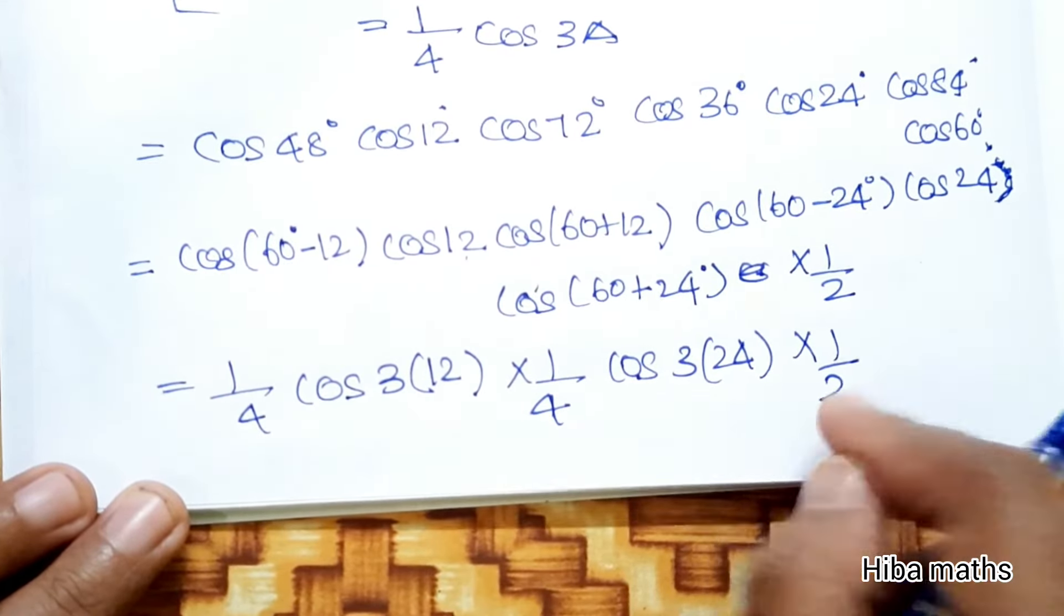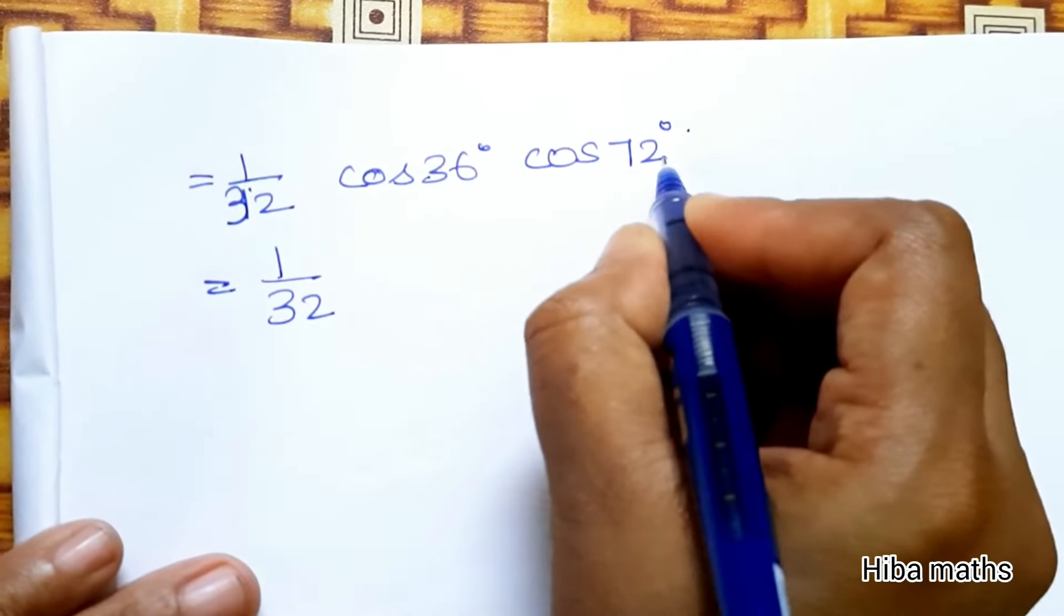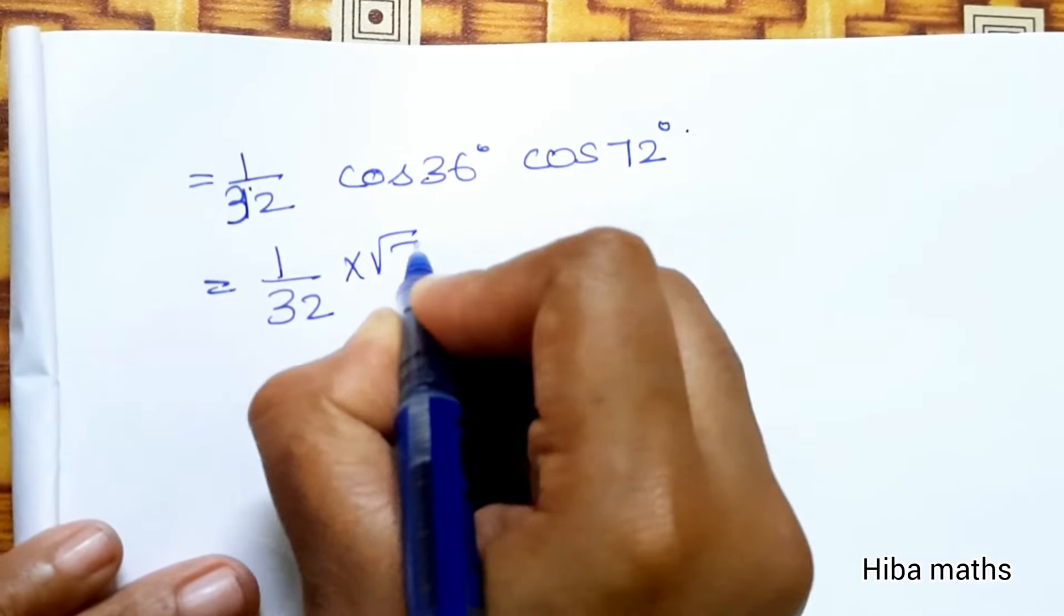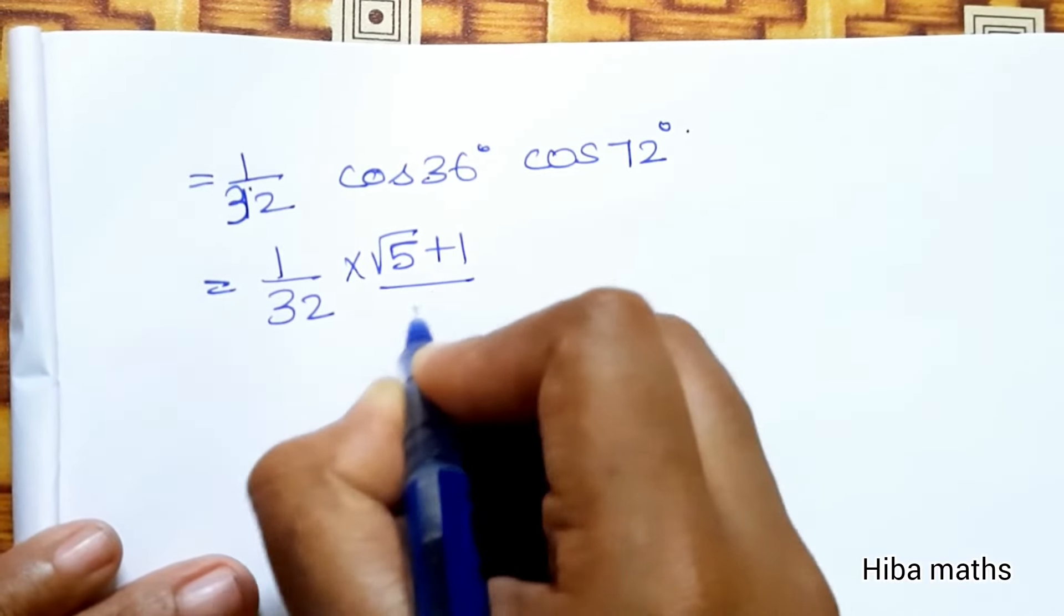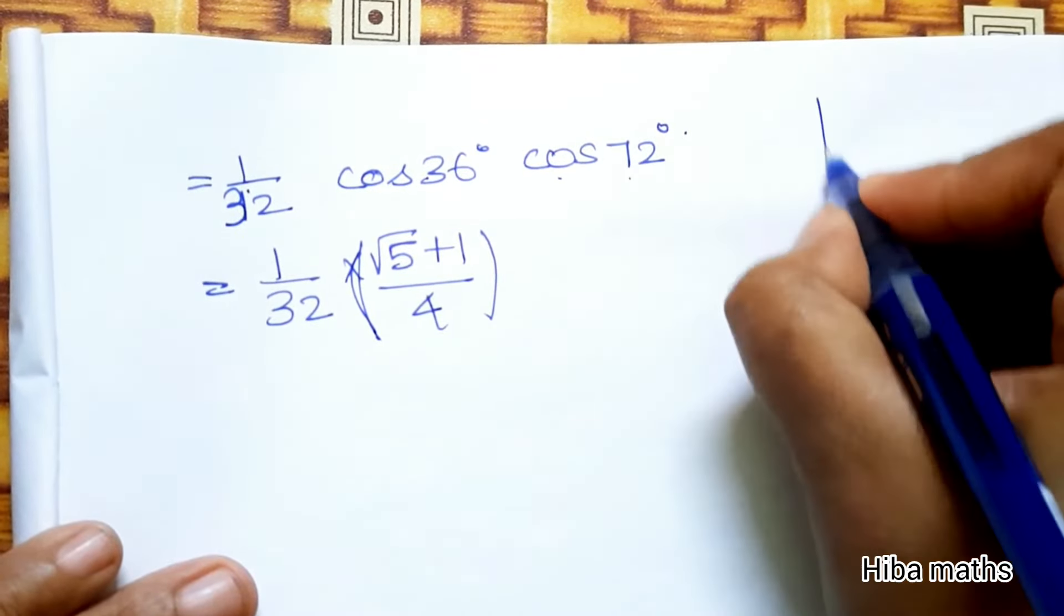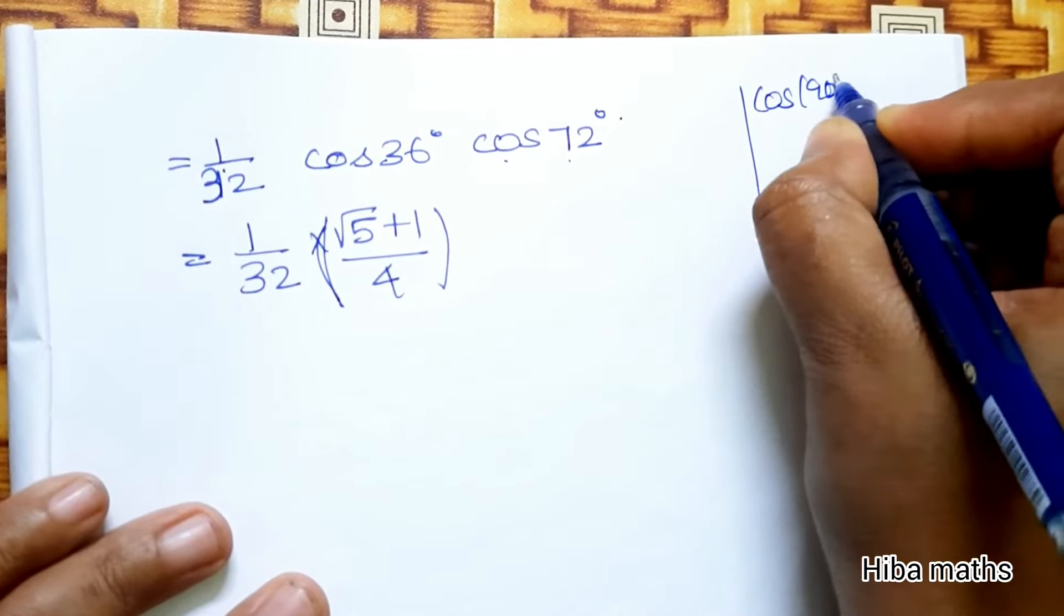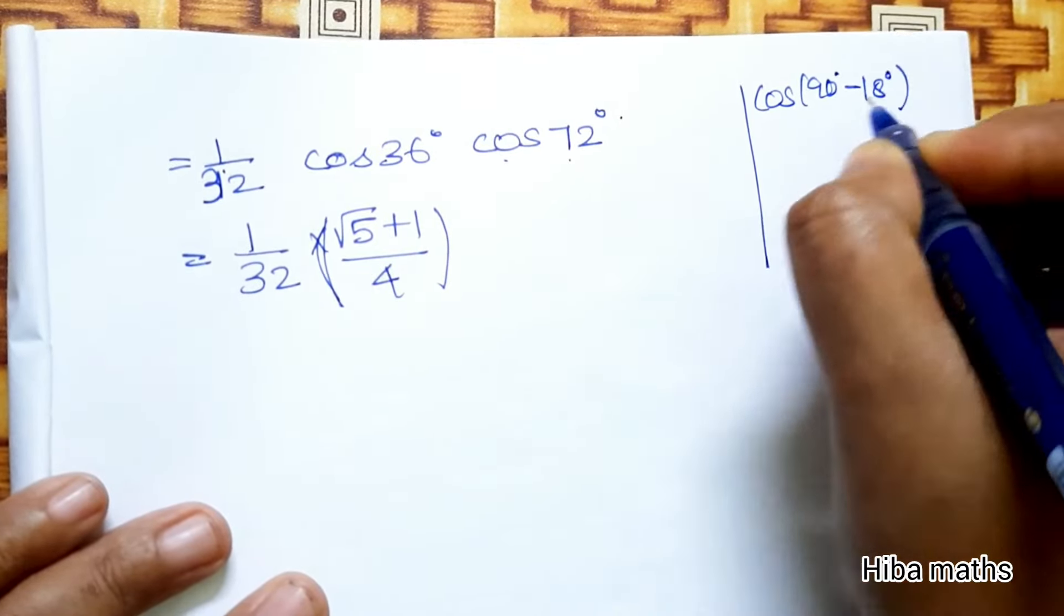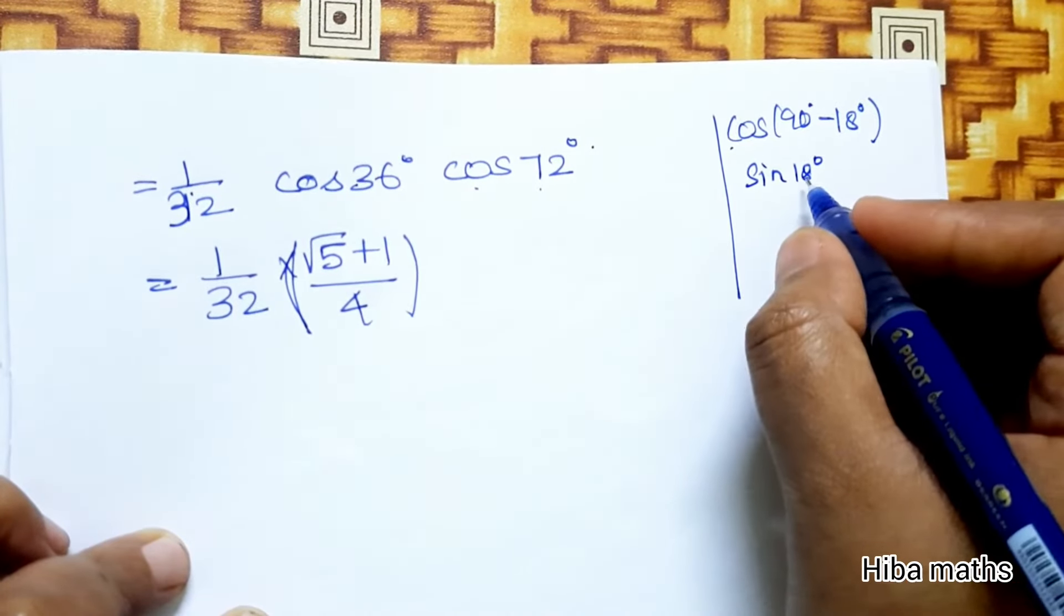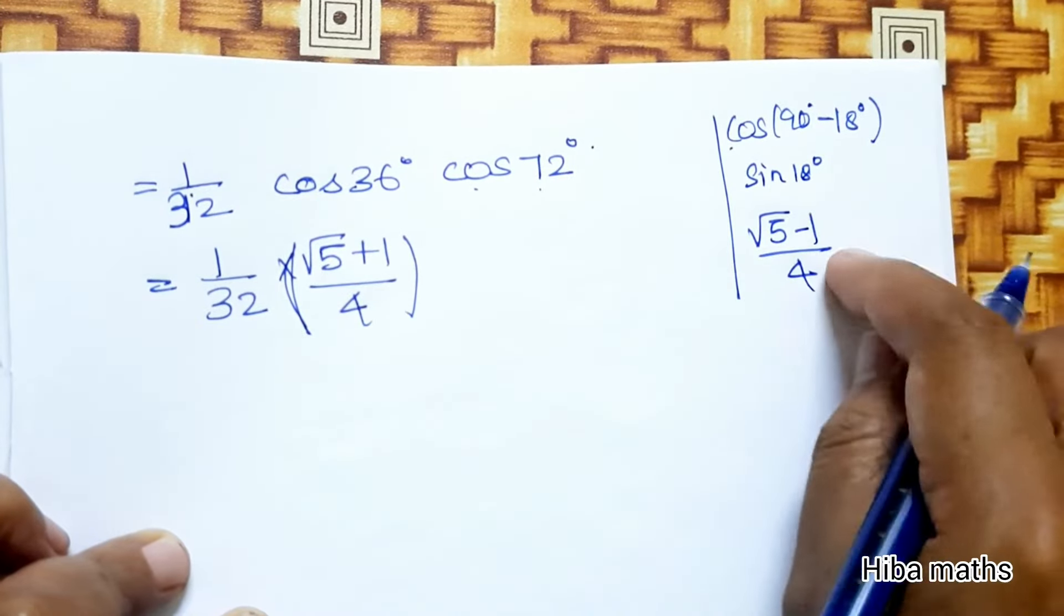We already know cos(36°) = (√5 + 1)/4. For cos(72°), we use cos(72°) = cos(90° - 18°) = sin(18°), and sin(18°) = (√5 - 1)/4.